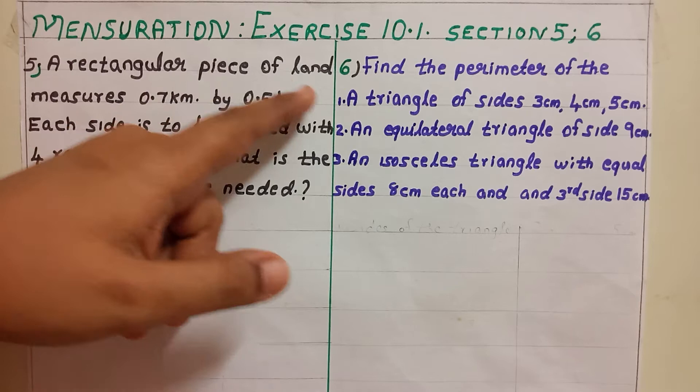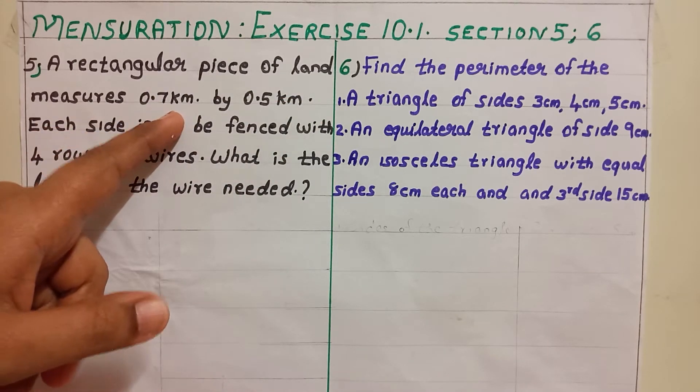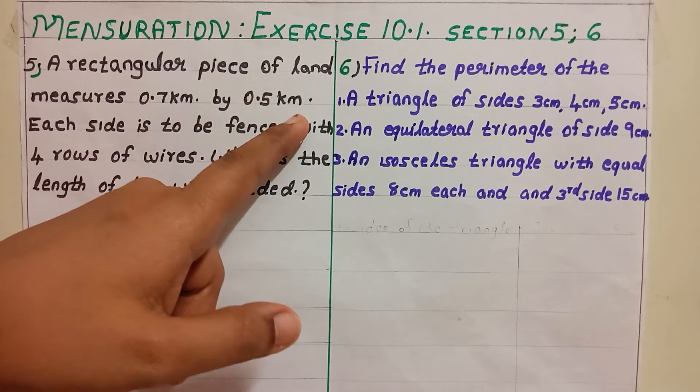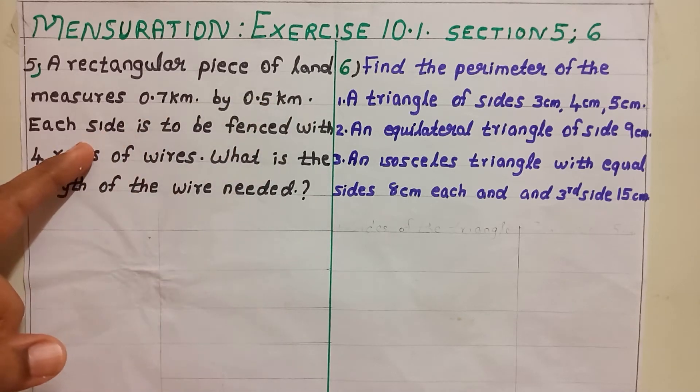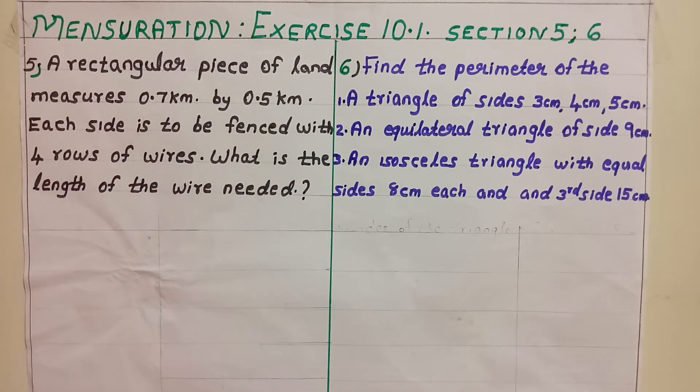The 5th question says that a rectangular piece of land measures 0.7 km by 0.5 km. Each side is to be fenced with 4 rows of wires. What is the length of the wire needed?